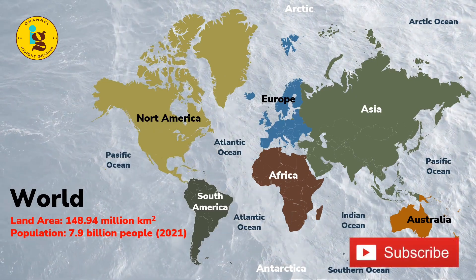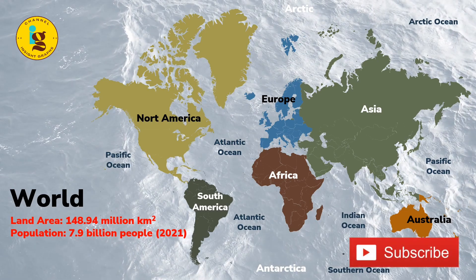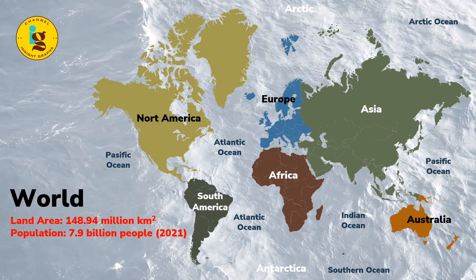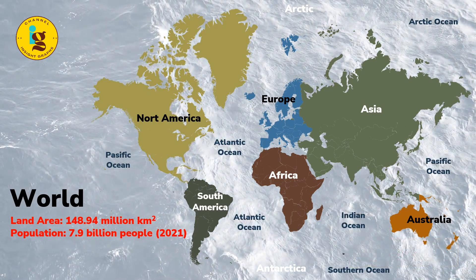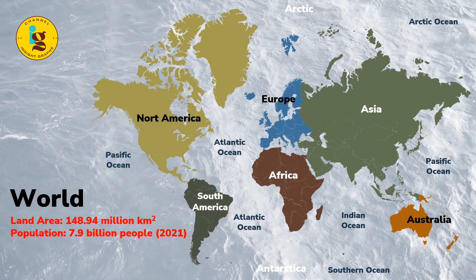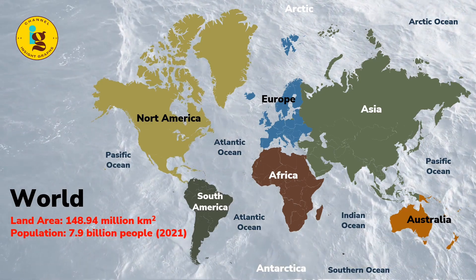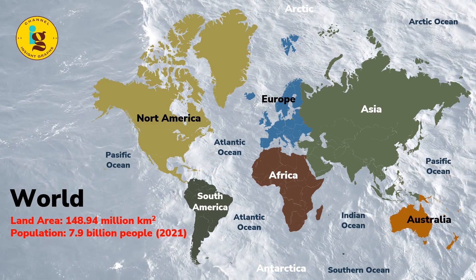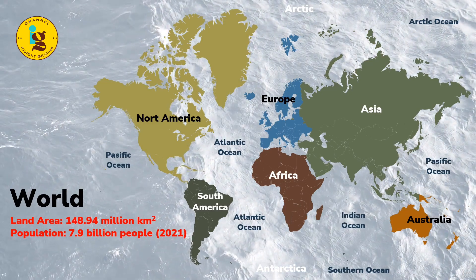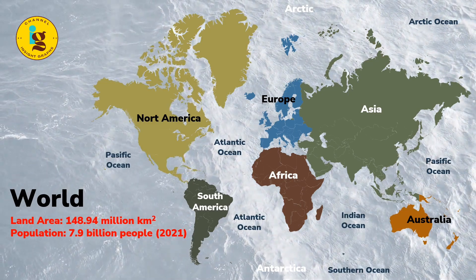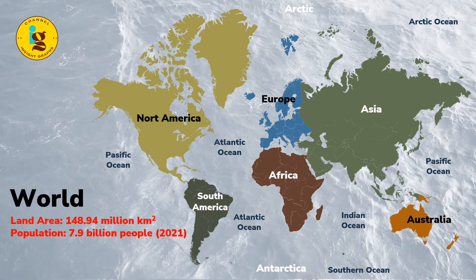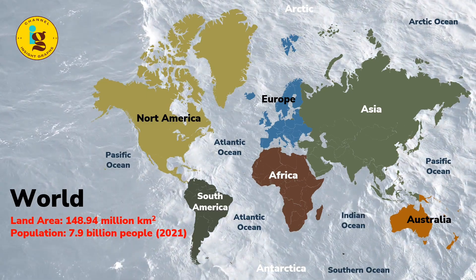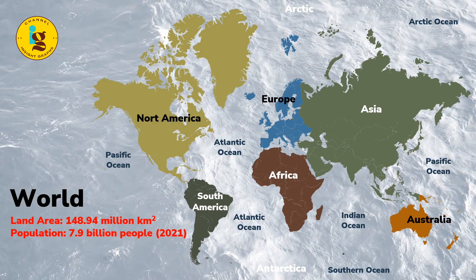This includes all of the continents, islands, and other land masses that make up the earth's surface. As of 2021, the estimated global population of the world is approximately 7.9 billion people. This number is constantly changing due to births, deaths, and migration, and is projected to continue growing in the coming decades. Understanding the population and number of countries within each continent is important for understanding the cultural and political diversity of our planet.